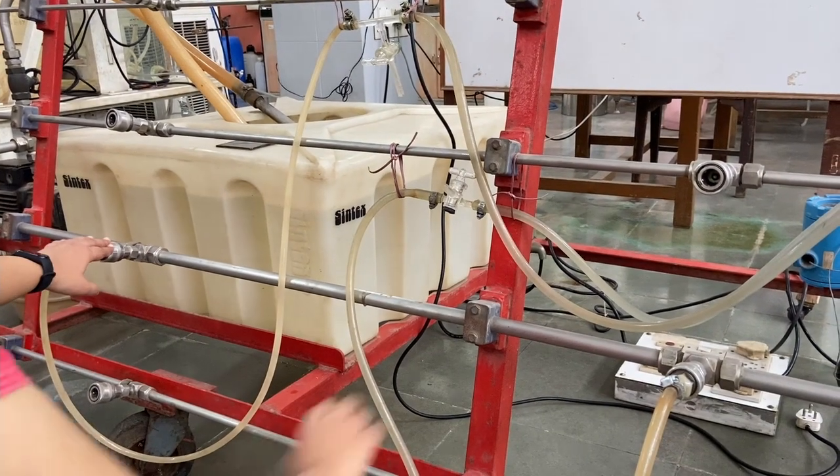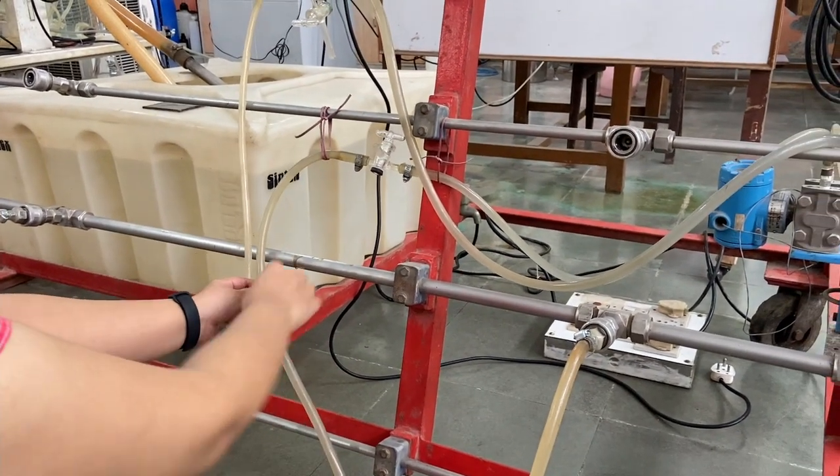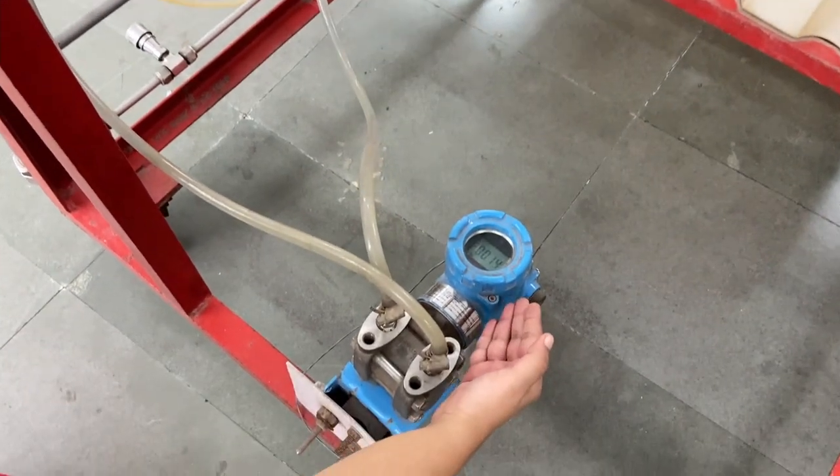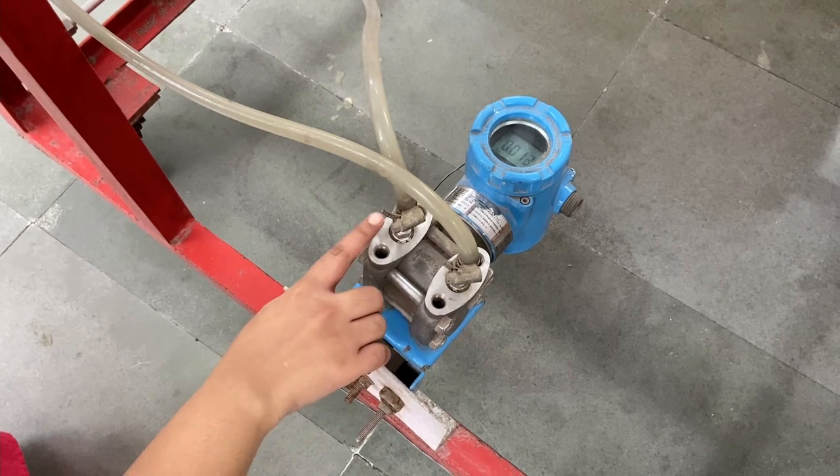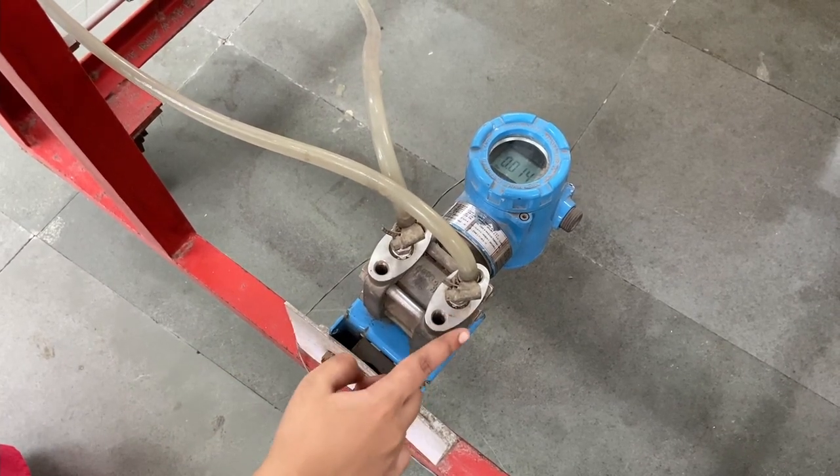The pressure drop across the two points in the pipes is measured using a differential pressure transducer. This instrument has a diaphragm as a sensing element placed between two ports which gets deflected by the applied pressure.